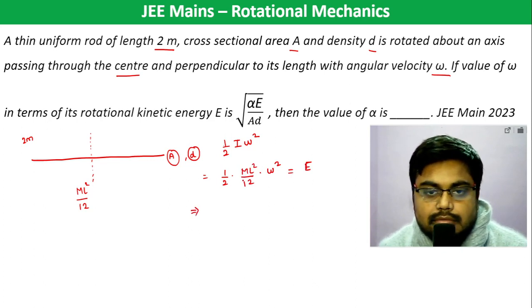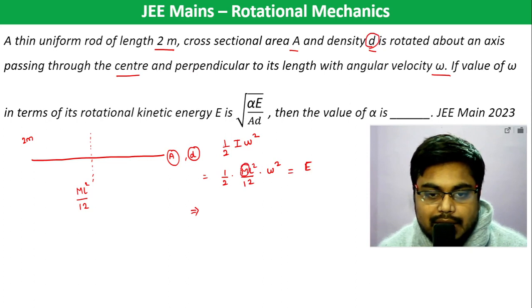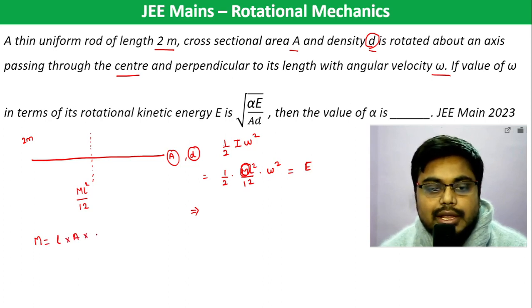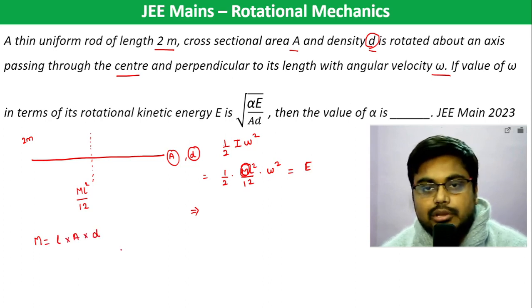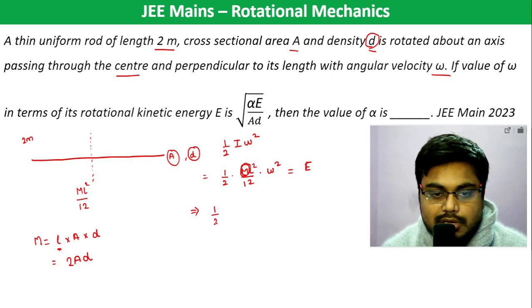Now, to substitute M, we use the relation: mass equals length into area of cross-section into density D — that is, volume into density. So since length is 2 meter, mass becomes 2AD.